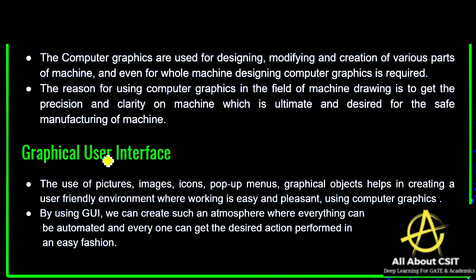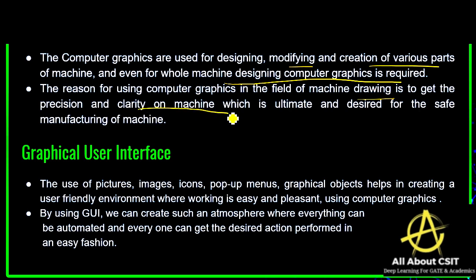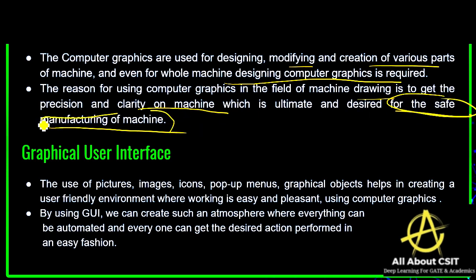Machine drawing — computer graphics are used for designing, modifying, and creation of various parts of a machine, and even for whole machine designing. The reason for using computer graphics in machine drawing is to get precision and clarity on the machine, which is ultimately required for the safe manufacturing of machines.